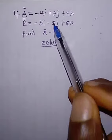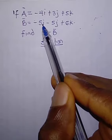If vector A equals this and vector B equals this, they want us to find the difference between the two vectors. So let's start.